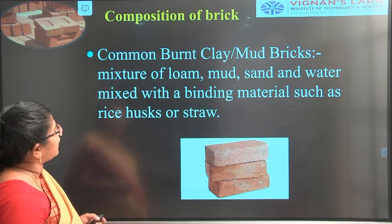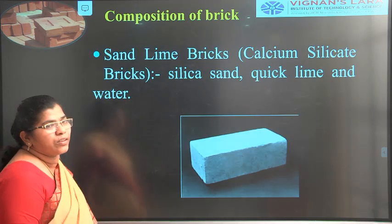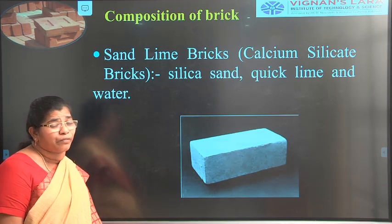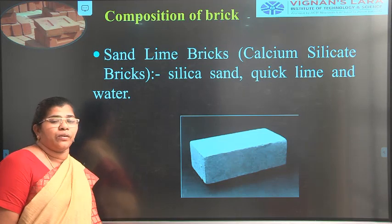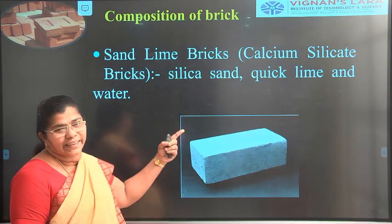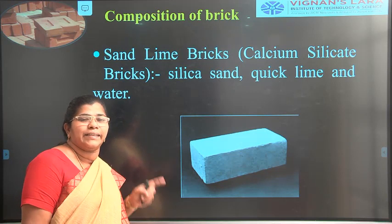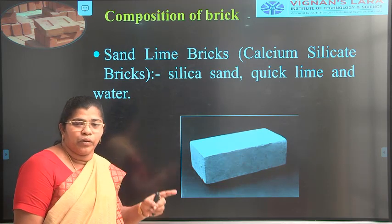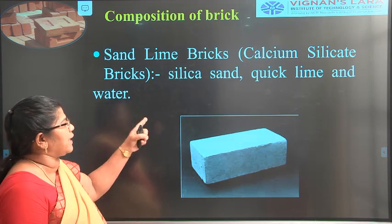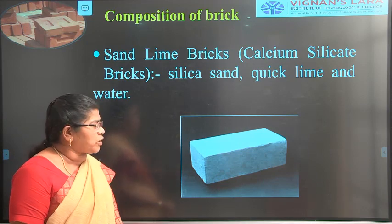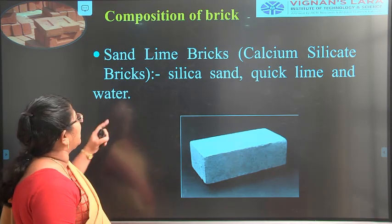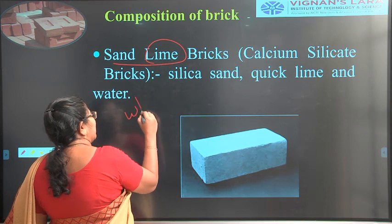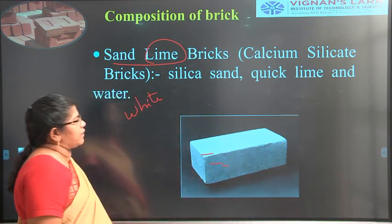The second type is sand lime bricks, also called calcium silicate bricks. Silica sand — especially quartz sand — is very high in silica. Sand lime bricks are mostly white in color.